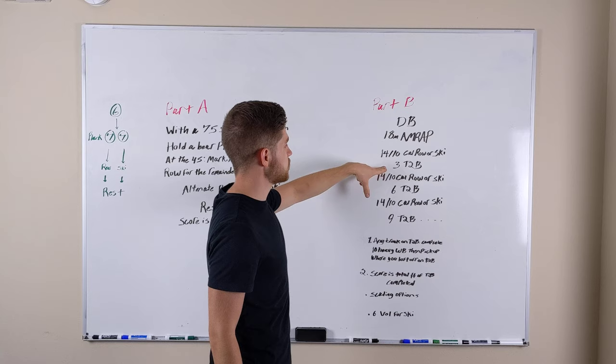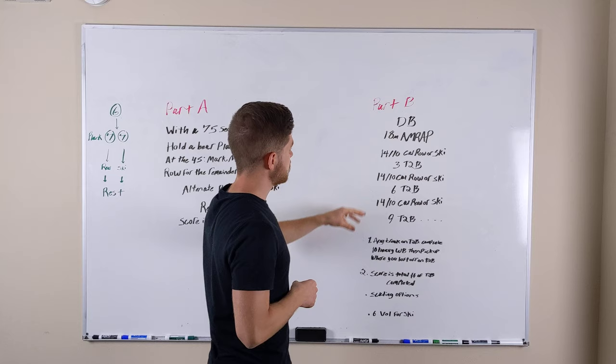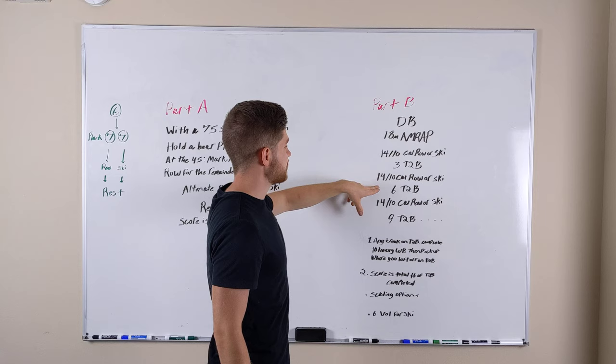After those three reps are complete, you're going back to the row or ski - 14 again for guys, 10 for the ladies - exact same rep scheme there.